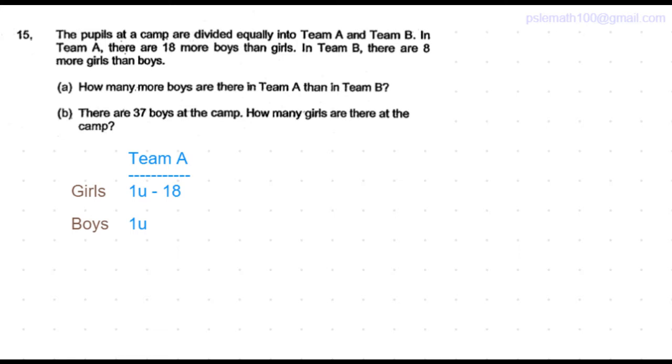Let's represent the number of boys in Team A to be equal to 1u. So the number of girls will be 1u minus 18.